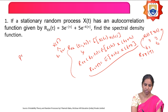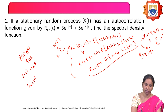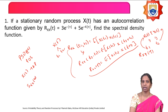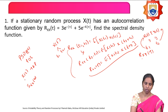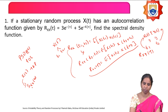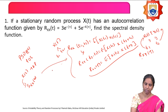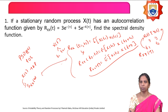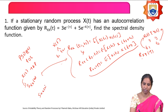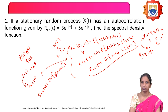What is the power spectral density? This is also called the power density spectrum. If x(t) is a random process, then the power density spectrum describes how the power is distributed with respect to frequency. It is denoted by Sx(ω). The relation between autocorrelation and power spectral density is that Sx(ω) is the Fourier transform of the autocorrelation function.